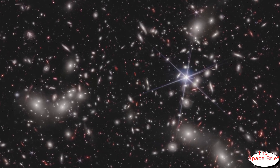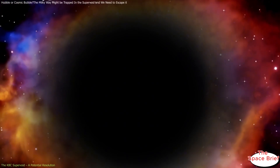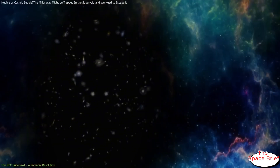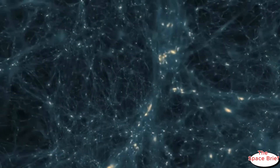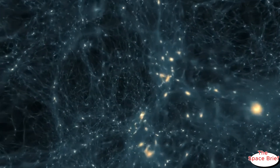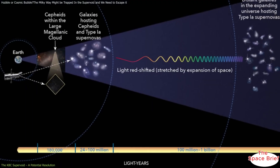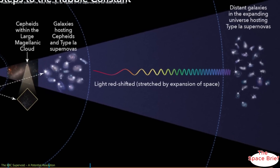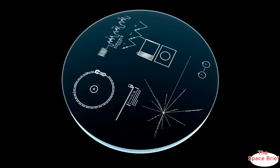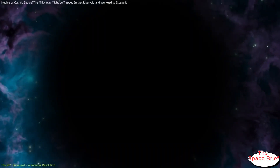This means that many of these observations are conducted within the KBC supervoid. Since the universe's expansion rate has changed over time, measurements within this void reflect a localized accelerated expansion rather than the global average. Supervoids like the KBC affect nearby galaxies in a unique way — because they are underdense, they exert less gravitational pull, creating a negative mass effect.